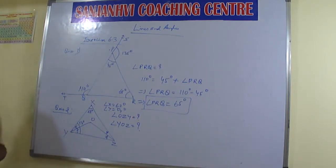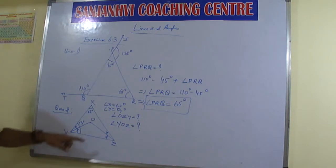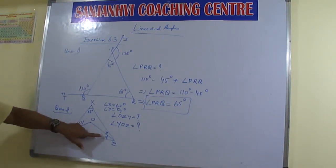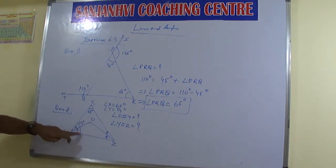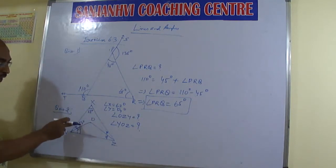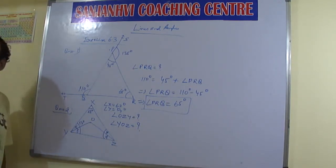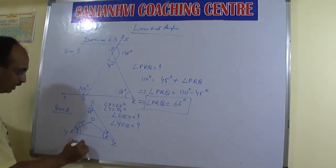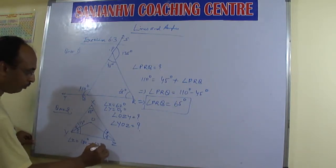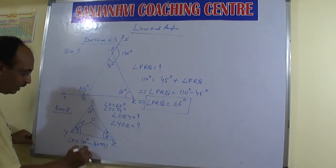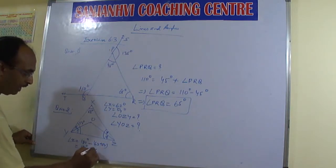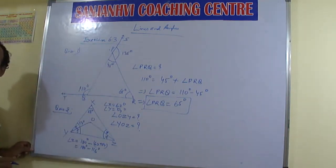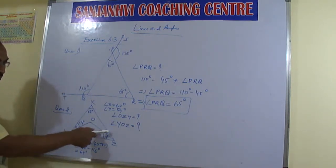An angle bisector divides an angle into two equal parts. Using angle sum property: 62 plus 54 plus angle Z equals 180 degrees, so angle Z equals 180 minus 116, which gives 64 degrees. Since ZO is the bisector of angle Z, angle OZY equals 64 divided by 2, which is 32 degrees.